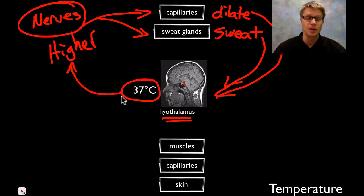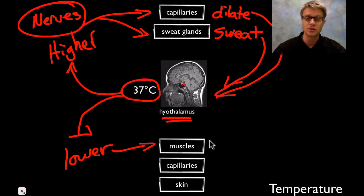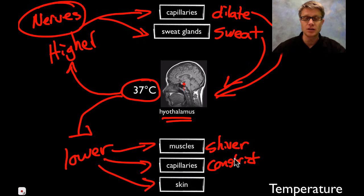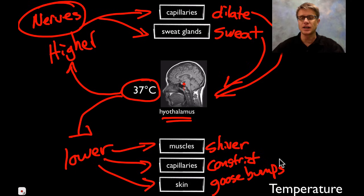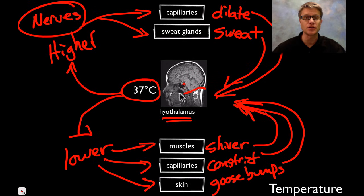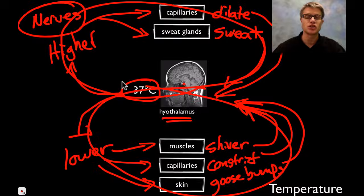But if the temperature goes too low — below 37 degrees — then we trigger muscles and those are going to shiver. We trigger the capillaries and those are going to constrict, or vasoconstrict, basically holding heat closer to our body. And then in the skin we might get some goose bumps, which is our skin pulling itself in tight. All of these things work together to raise the body temperature until it hits 37 degrees. And again we see that characteristic figure-8 shape.